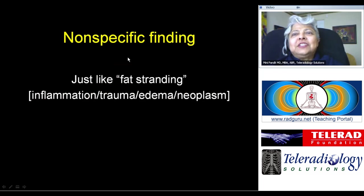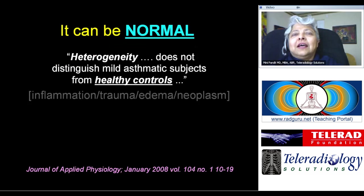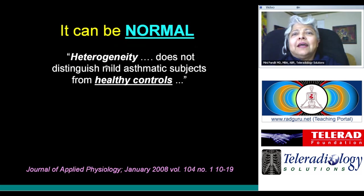Heterogeneous lungs is a very nonspecific finding. It's as nonspecific as fat stranding is in the rest of the body. It can be seen in inflammation, trauma, edema, and even neoplasm such as multifocal adenocarcinoma in situ, which was previously known as bronchioloalveolar cell carcinoma. And the funny thing is that heterogeneous lungs can be normal — that was discovered in a study done on asthmatics where they found that the healthy controls also had heterogeneous lungs.